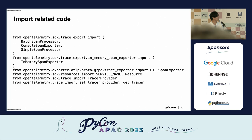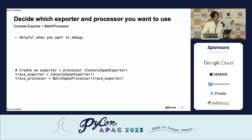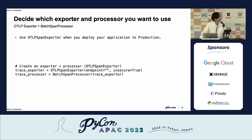Here we import the related packages. I'll provide three examples of exporter and processor combinations. The first example uses the console exporter plus the batch processor — your trace data will be output to your console, which is very helpful for debugging. We initialize the console span exporter and provide it to the batch span processor. The second case uses the memory exporter plus the simple span processor — because the data is stored in memory, it's very helpful for writing unit tests to verify your logic.